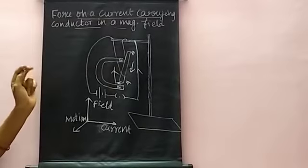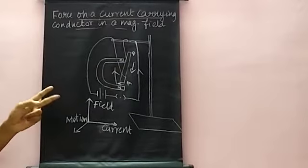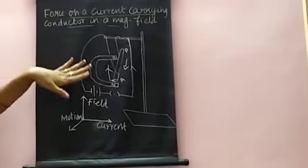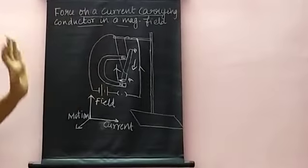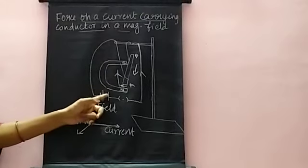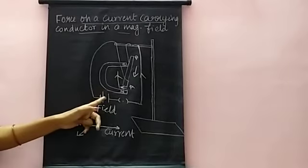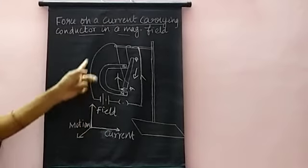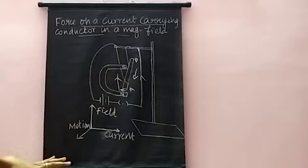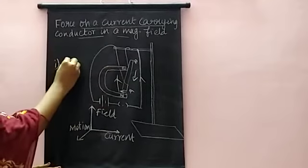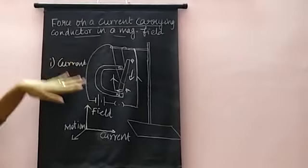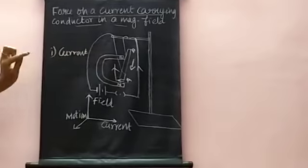The direction of the force depends upon two factors. The direction of force is reversed whenever the direction of the current is reversed. We know how to reverse the current — by rearranging the battery, placing positive and negative terminals opposite. When we reverse the battery, the current is also reversed, so the direction of the magnetic force is also reversed.